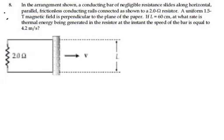Here's problem 31.8. In the arrangement shown, a conducting bar of negligible resistance slides along horizontal parallel frictionless conducting rails connected as shown to a 2 ohm resistor. A uniform 1.5 Tesla magnetic field is perpendicular to the plane of the paper. If L is equal to 60 centimeters, at what rate is thermal energy being generated in the resistor at the instant the speed of the bar is equal to 4.2 meters per second?